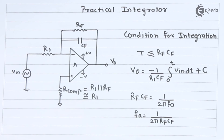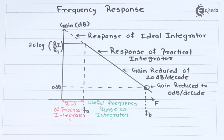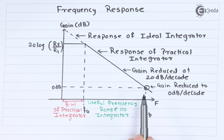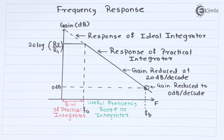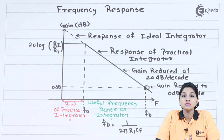Now let's see the frequency response of the ideal and practical integrator circuits. After the frequency FA, the gain of the practical as well as ideal integrator starts to reduce towards 0, and the rate of reduction is 20 dB per decade. At frequency FB, the gain reduces to 0 dB — the value of FB is given as FB equals 1 upon 2π·R1·CF. From the frequency response we can see that the bandwidth of the practical integrator is very small and is restricted to the range FA to FB only.